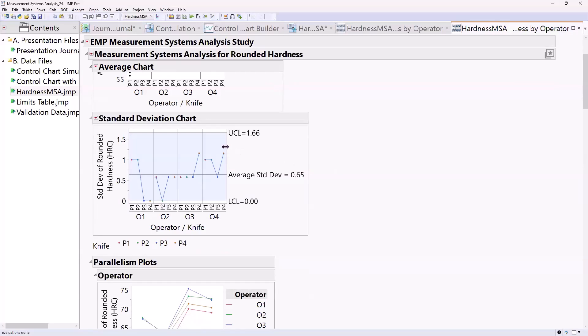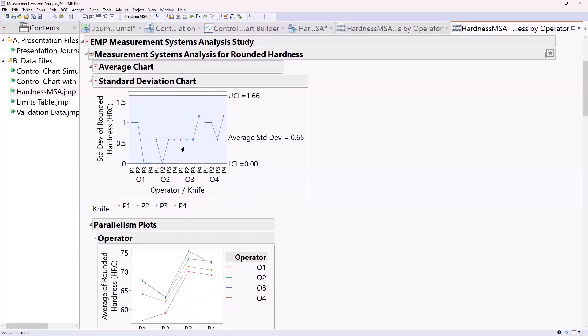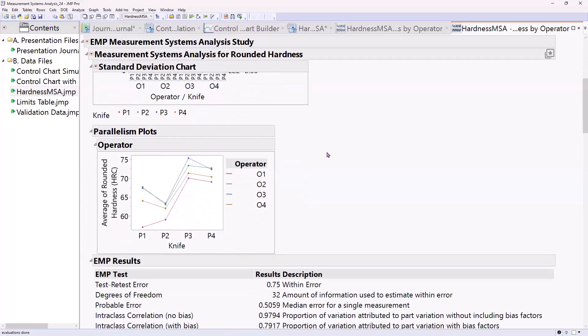The standard deviation chart is giving us an assessment of whether our noise is consistent from operator to operator and point to point. In this one, we want our points to be inside the control limit, and they are.